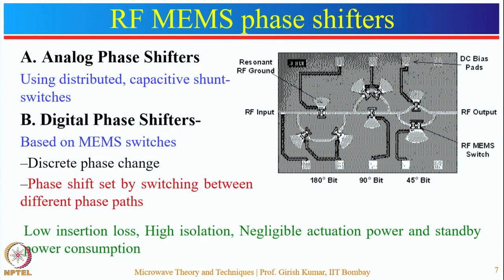These phase shifters are divided into two categories: analog phase shifters and digital phase shifters. Analog phase shifters can be designed using distributed and capacitive shunt switches. Digital phase shifters are made using discrete phase changes, where the phase shift is achieved by switching between different phase paths. Here is the example of a digital switched line phase shifter designed for Ka-band. DC biasing is provided and it uses a VLS topology where resonant stubs act as RF ground.